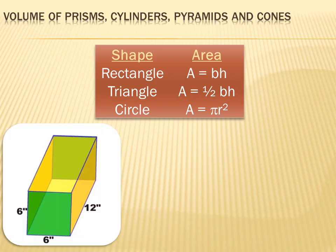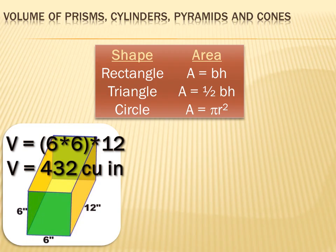For instance, this is a square prism. The base is six inches by six inches. And it has two bases, so the volume would be the area of the base times the height. Or six times six times twelve, which is 432 cubic inches.